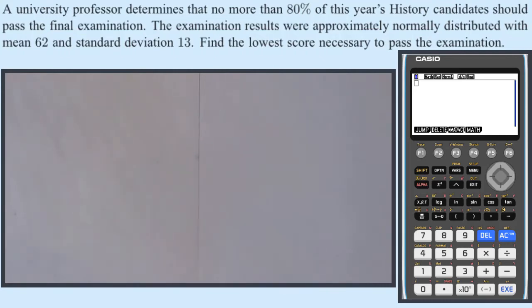A university professor determines that no more than 80% of this year's history candidates should pass the final examination. The examination results were approximately normally distributed with a mean of 62 and standard deviation of 13, to find the lowest score necessary in order to pass the examination.